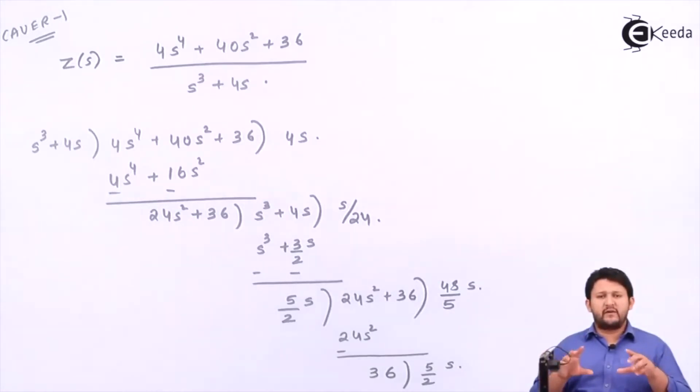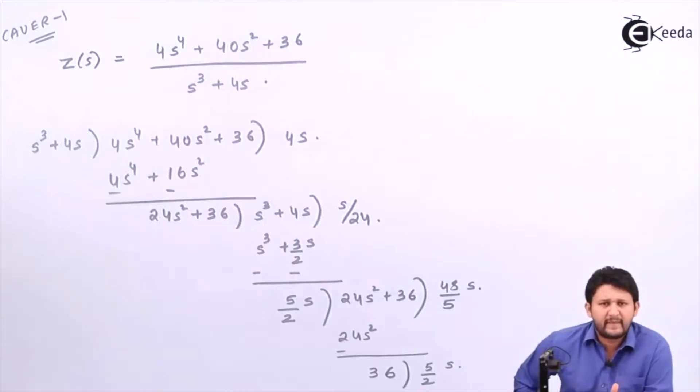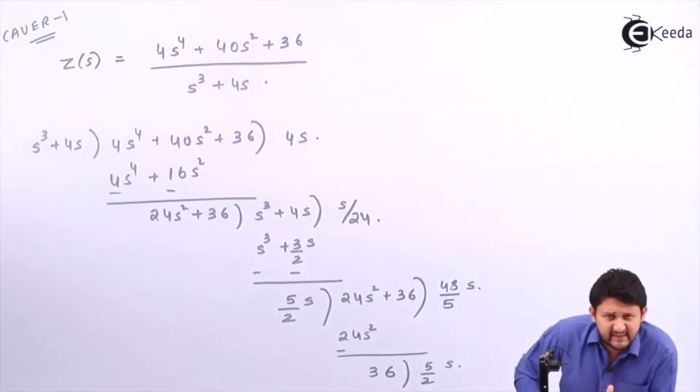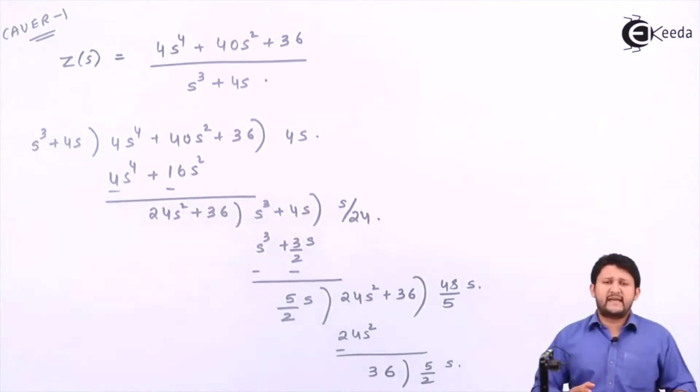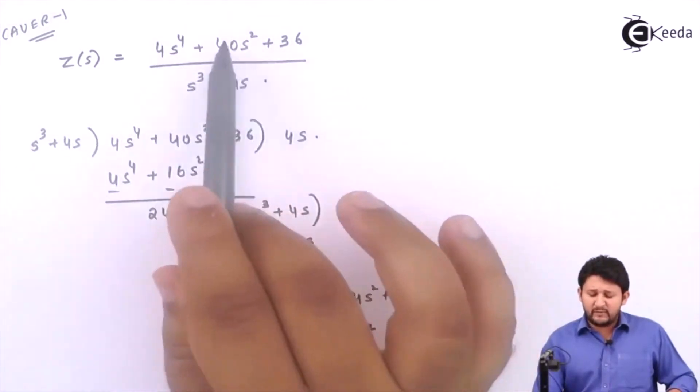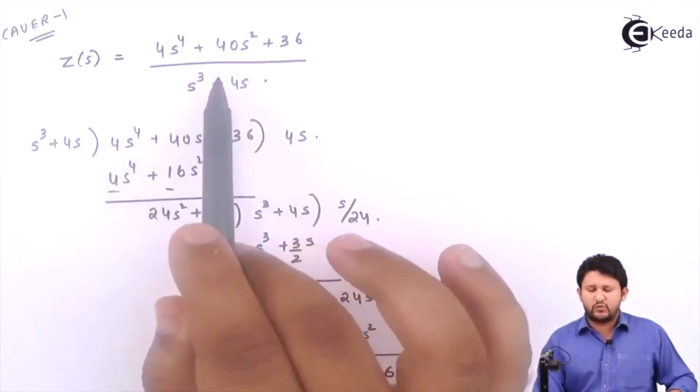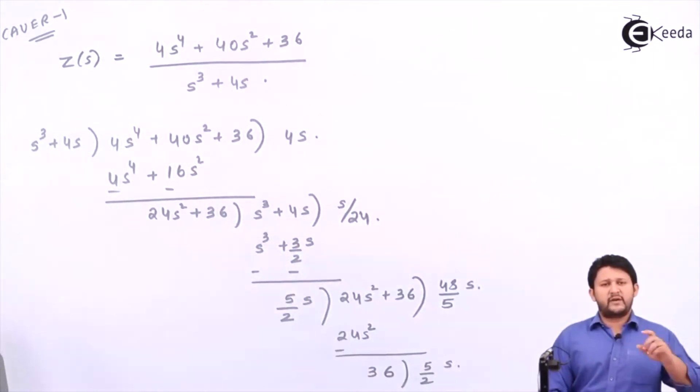Now the question arises, what about Cauer Form I? What is the difference between Cauer Form I and Cauer Form II? When I say Cauer, means you need to do continued division guys, make it a point. When I say Cauer Form I, your power should be arranged from highest to lowest, highest to lowest. And you can itself understand what will happen in Cauer Form II.